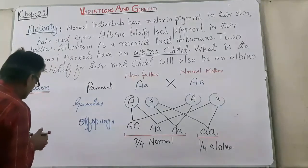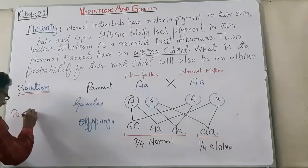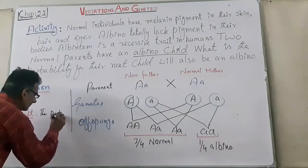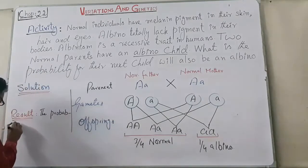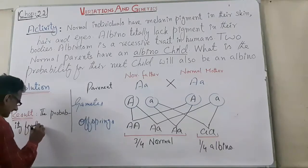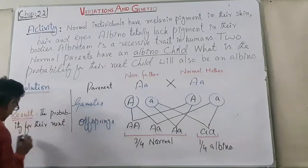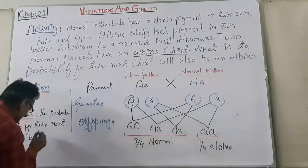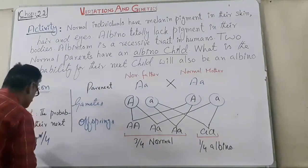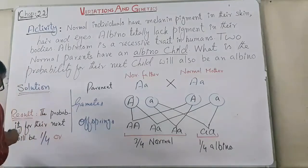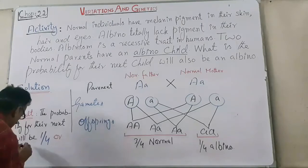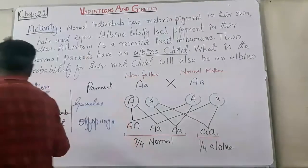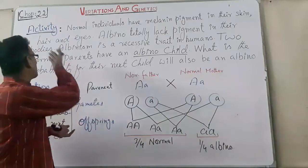Now we will write the result. The probability for their next child to be albino is 1 out of 4, or 25%. This is the result and the solution of this activity. Thank you very much.